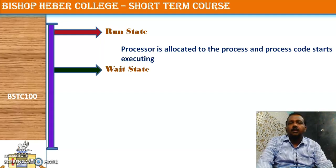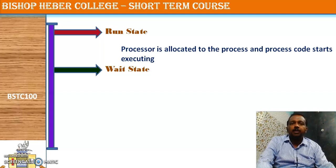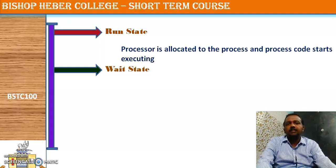During the execution of a process, it may wait for some event to happen. For example, if there is a statement like c = a + b, the computation is done. But if the next statement is an input statement, the cursor waits on screen and we wait for user input. The process cannot continue until it receives that input.